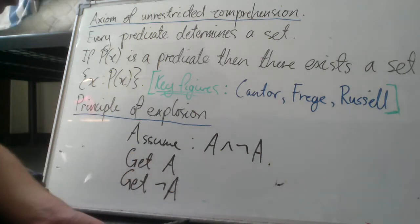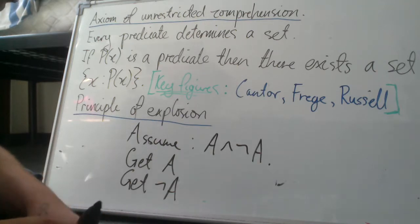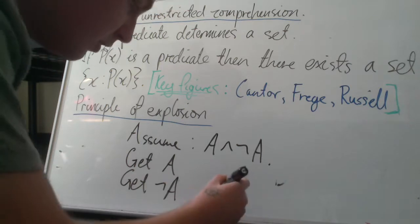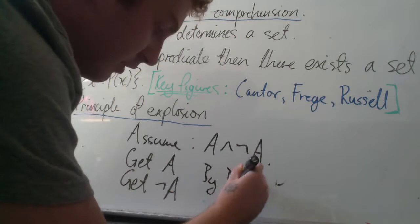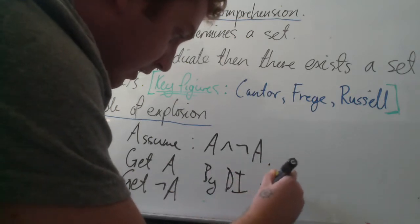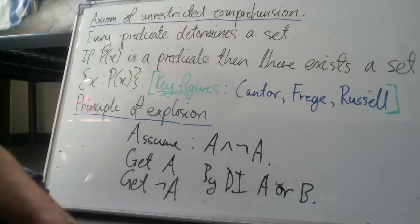A and not A. Then by disjunction introduction, we may append to either of these statements, doesn't really matter which, any other statement. So let's append to A, B. So by disjunction introduction, A or B.